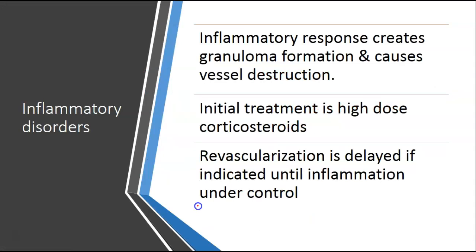Inflammatory disorders: there's always going to be an inflammatory response that helps with granuloma formation and causes vessel destruction. The initial treatment is usually high doses of corticosteroids. Revascularization is delayed if indicated until the inflammation is under control. Look at the patient's comorbidities — things like diabetes — because corticosteroids inhibit the body's ability to use insulin, so these patients are going to be at higher risk for hyperglycemia.